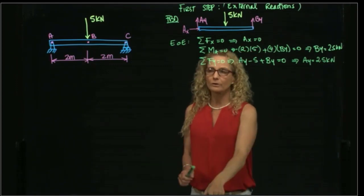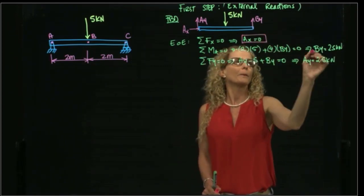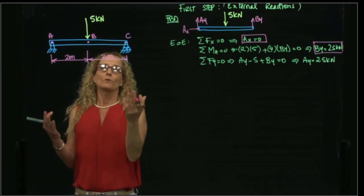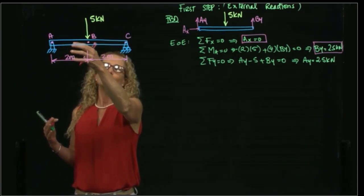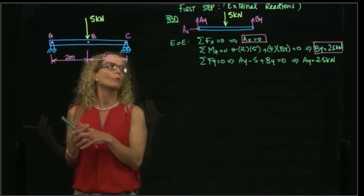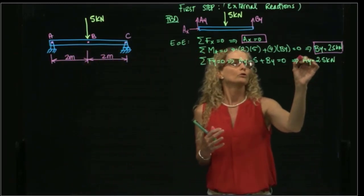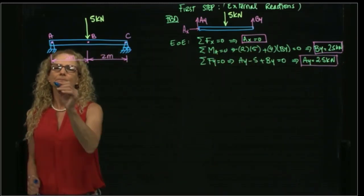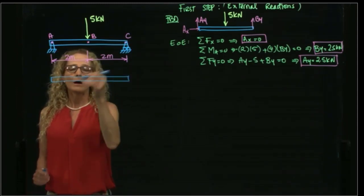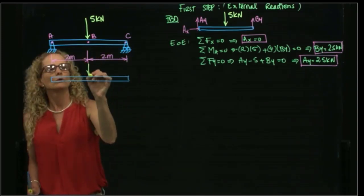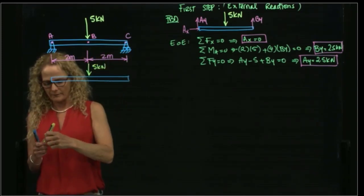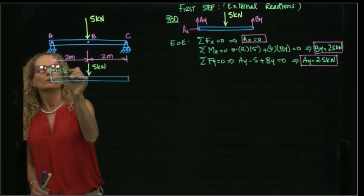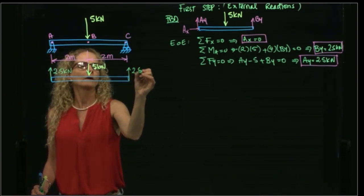This is a symmetrical beam and those results are as expected, since this force is located at the middle of the beam, so the reaction forces are distributed equally in both supports, giving 2.5 kN in both cases. I can now draw the beam again with the correct forces: 5 kN at the middle, and 2.5 kN at each support.